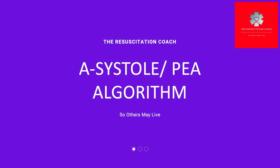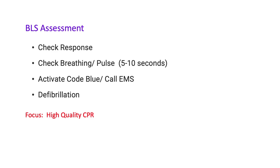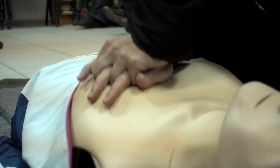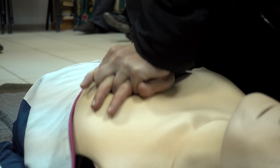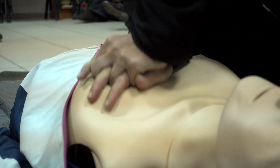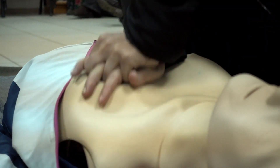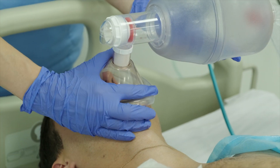We'll start off with our initial impression. If it appears that a victim is unresponsive, immediately start with your BLS assessment. Tap and shout — are you okay? Check breathing, check pulse, five to ten seconds. If there's no pulse and there's no breathing, immediately start high-quality CPR and activate your code blue if you're in the hospital, or call your local emergency number if you're out of the hospital.